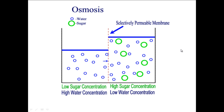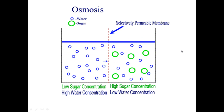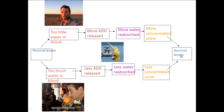Now let's look at how ADH actually regulates blood water. Here you've got the normal levels, and if there's a change from that stable level — whether there's too little or too much — that change is detected by receptors. Information is then sent to the hypothalamus, the control centre, which tells it to stimulate either more ADH or less ADH. If there's too much water, less ADH is released, which means less water gets reabsorbed by the kidneys, so you're going to get a less concentrated urine.